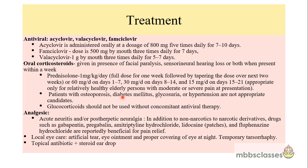In cases of osteoporosis, diabetes mellitus, glycosuria, and hypertension, patients are not suitable candidates for oral corticosteroids. Moreover, glucocorticoids should not be used without concomitant antiviral therapy. Analgesics play a vital role because patients have sharp pain in the prodromal stage and also post-herpetic neuralgia — pain persisting for months after resolution of vesicles. Analgesics can range from non-narcotics to narcotics. Drugs such as gabapentin, pregabalin, amitriptyline, and lidocaine are found to be beneficial for pain relief.